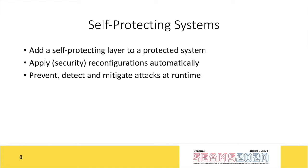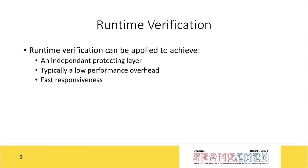Self-protecting systems add a protecting layer to a managed system, achieving separation of concerns. They can apply reconfigurations — in this case, security reconfigurations — in an automated fashion to prevent, detect, and mitigate attacks at runtime. As a technology, we use runtime verification, which achieves an independent protecting layer with a low performance overhead compared to model checking or other formal methods, leading to fast system responsiveness.